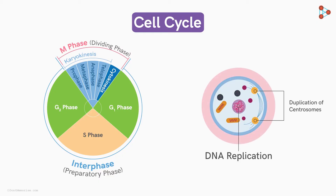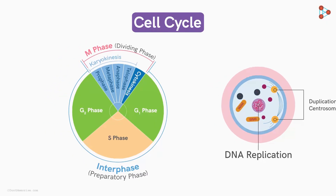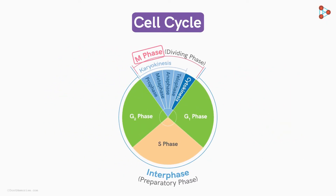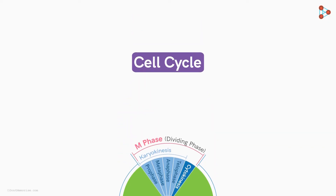This perfectly grown cell is all set to divide and enter the meiotic phase. The cell will undergo karyokinesis, followed by cytokinesis. Let's dive deeper into this world of meiosis.